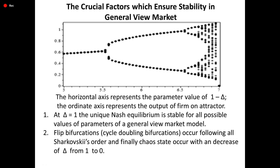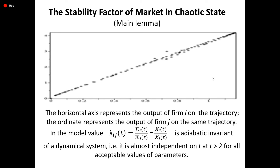The crucial factors which ensure stability in the general view market: the horizontal axis represents the parameter value of (1 - delta), and the ordinate axis represents the output of the firm on the attractor. First, at delta equals 1, the unique Nash equilibrium is stable for all possible values of parameters of a general view market model. Second, flip bifurcations and cycle-doubling bifurcations occur following Sharkovsky's order, and finally chaos occurs with a decrease of delta from 1 to 0.